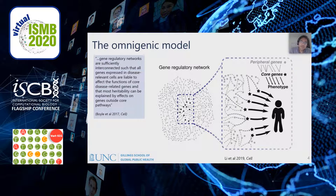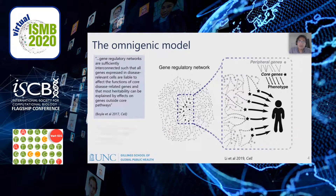Moving backwards in the central dogma, the omnigenic model applies to SNP-gene interactions as well. Local SNPs affect transcription of a gene through cis-regulation, while distal SNPs have indirect effects on transcription through trans-acting pathways. In the most recent paper from Jonathan Pritchard's group about the omnigenic model, distal SNPs were estimated to explain up to 70% of heritable gene expression.